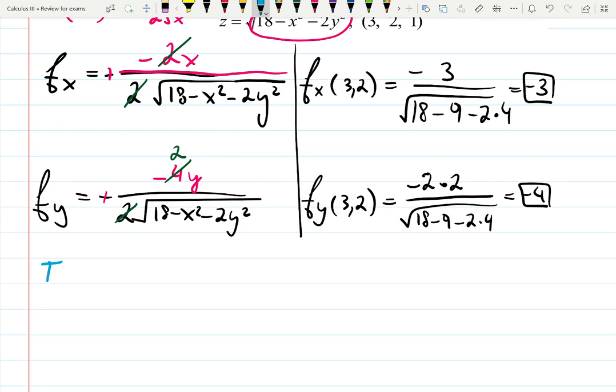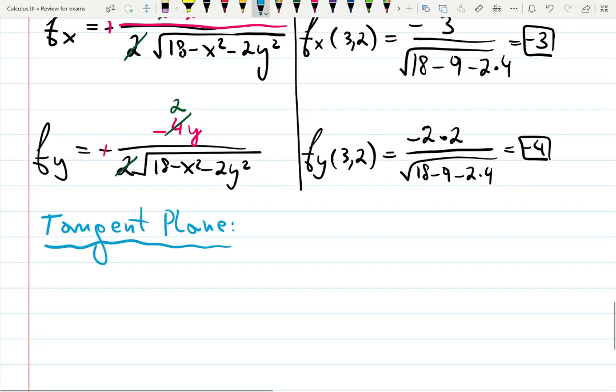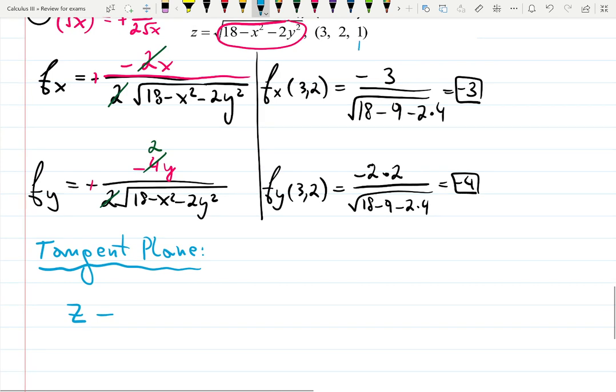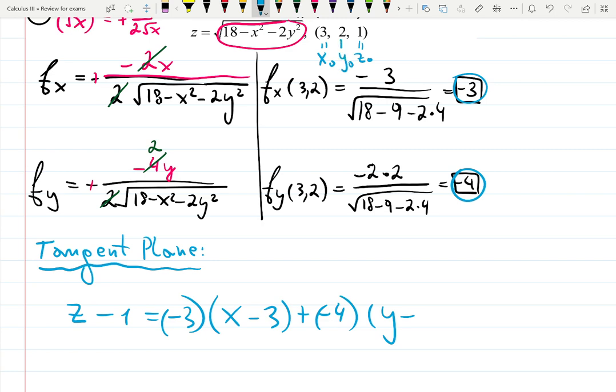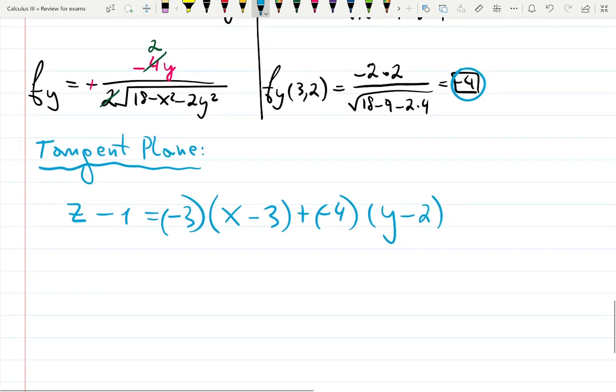So equation of the tangent plane is z minus z sub 0. What is my z sub 0? Here it is. 1. So z minus 1 equals the first slope, this one, minus 3 multiplied x minus x sub 0, which is 3 plus the second slope minus 4 times the shift y minus y sub 0, which is 2. What is the answer? Or if you want to simplify, it's going to be minus 3x and minus 4y. Then I have to check what is 1 plus 9 and plus 8. 18. And this is the final answer.